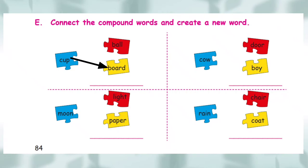Next, cow. We combine cow with door or boy. Cow, door, cow door. Is it meaningful? No. Next, cow plus boy. Cowboy. Yes, this is correct. Cowboy is a compound word.